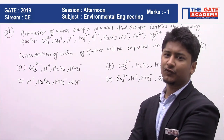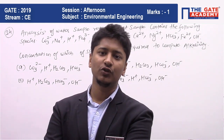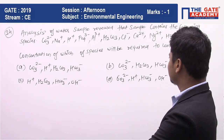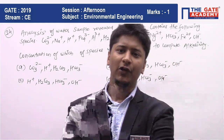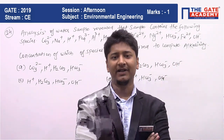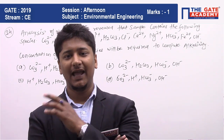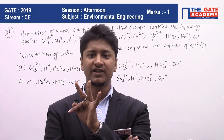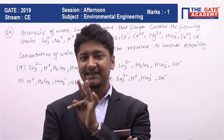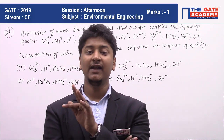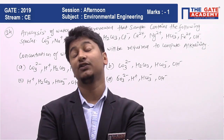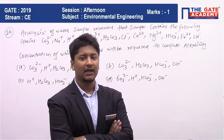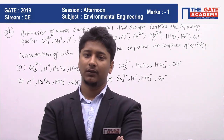This is an objective question, so you go through the options first. There are four options. If you look at your environmental engineering lecture, you will find that alkalinity is caused by three things only: OH⁻ species, HCO₃⁻ species, and CO₃²⁻ species. These are the three species mainly responsible for alkalinity in water.